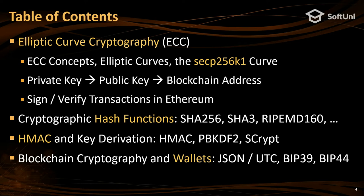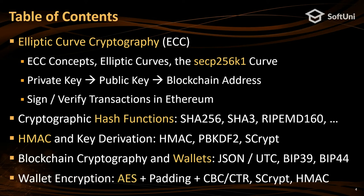I'll also cover crypto wallets and their standards — things like JSON UTC format used in MetaMask wallet, the BIP39 and BIP44 standards which define how to hierarchically derive public and private key pairs over the elliptic curve field. Finally, I'll explain AES which combines S-Crypt, HMAC key derivation, and HMAC message authentication codes.